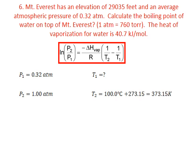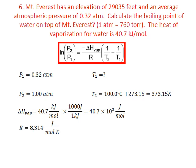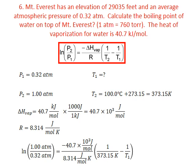We do have to convert the temperatures to kelvin by adding 273.15. The enthalpy of vaporization is 40.7 kilojoules per mole, converted to joules by multiplying by 1000 joules per 1 kilojoule. R is 8.314 joules per mole kelvin. We substitute this into our equation.